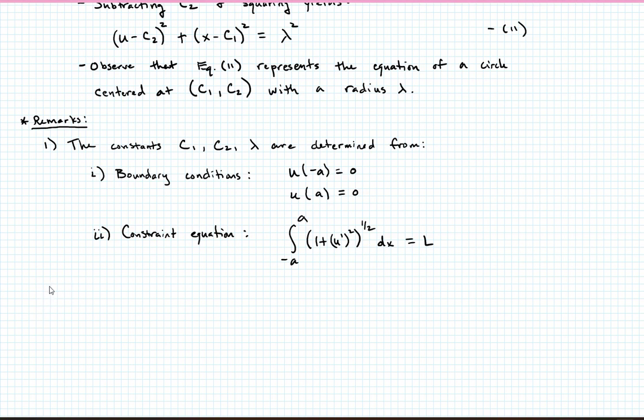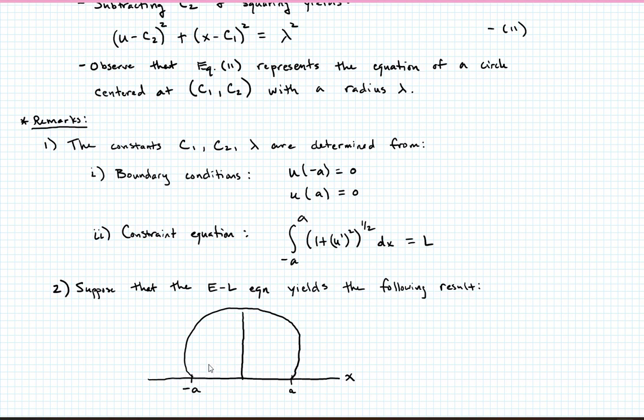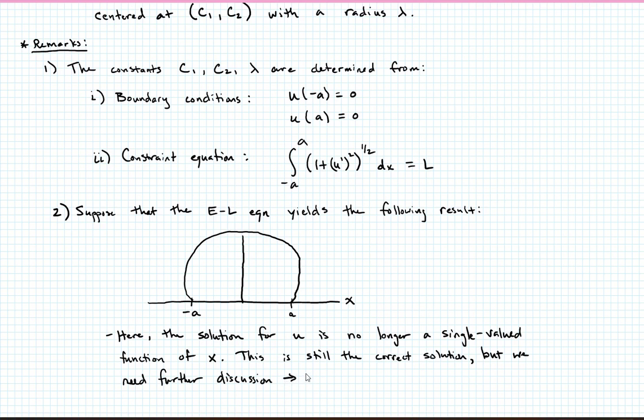Let's suppose though now, let's suppose that the Euler-Lagrange equation yields the following result. Let's suppose that our solution, so here's our axis again, so there's x, there's a, there's negative a. Let's suppose that it looks something like this. So this is a circle. What do you see as a problem here? Well, you see that in this case, and you could even see it from equation 11, but the solution for u is no longer a single-valued function of x. This is still the correct solution, but we need further discussion. And that discussion is going to come in a couple sections ahead when we talk about parametric representations.